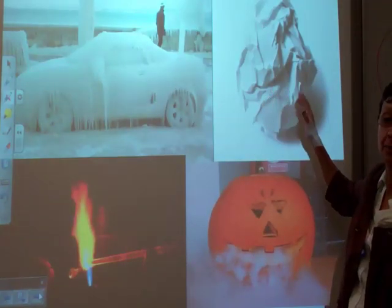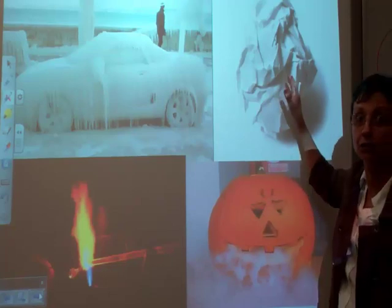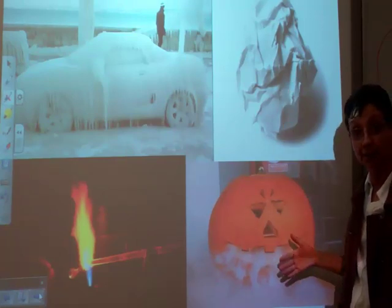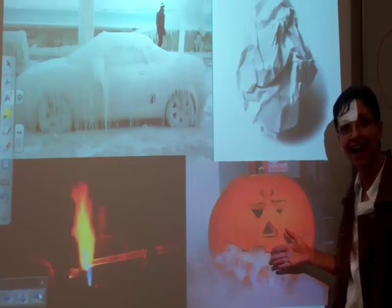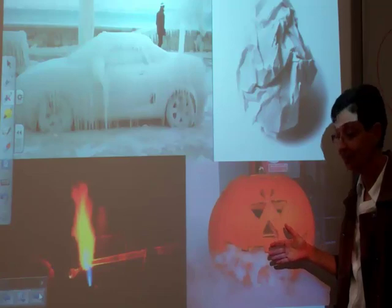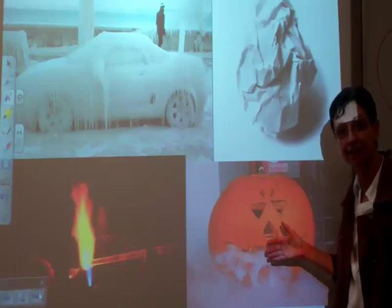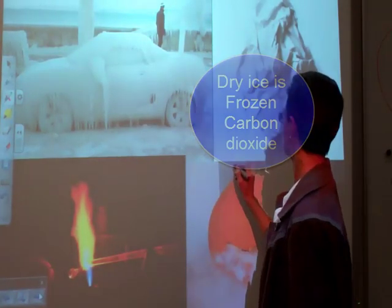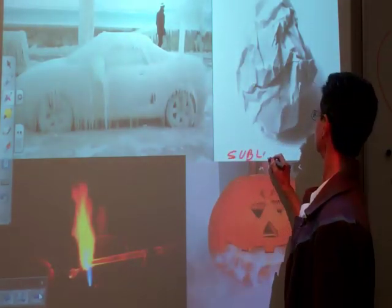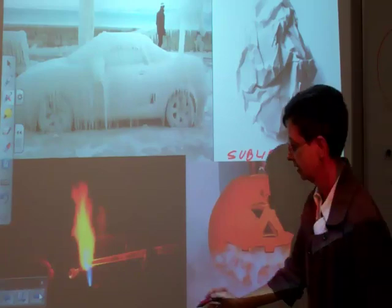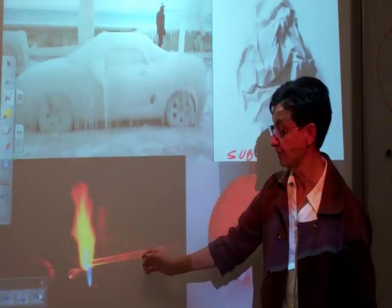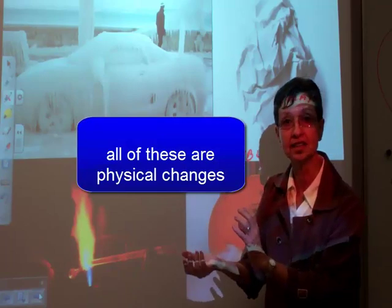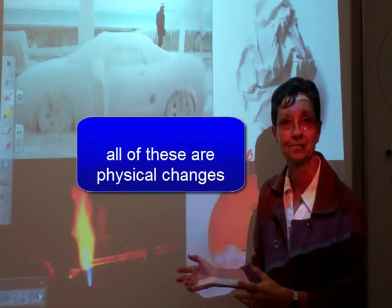Over here I have a piece of crumpled paper. Has it changed form? Of course not — it's still paper. Over here I have a pumpkin, and inside there is some dry ice. The dry ice is changing directly from the solid phase to the gas phase — that is called sublimation. And over here I have someone working with glass, heating up the glass and changing it by melting it into a beautiful sculpture — a glass sculpture.